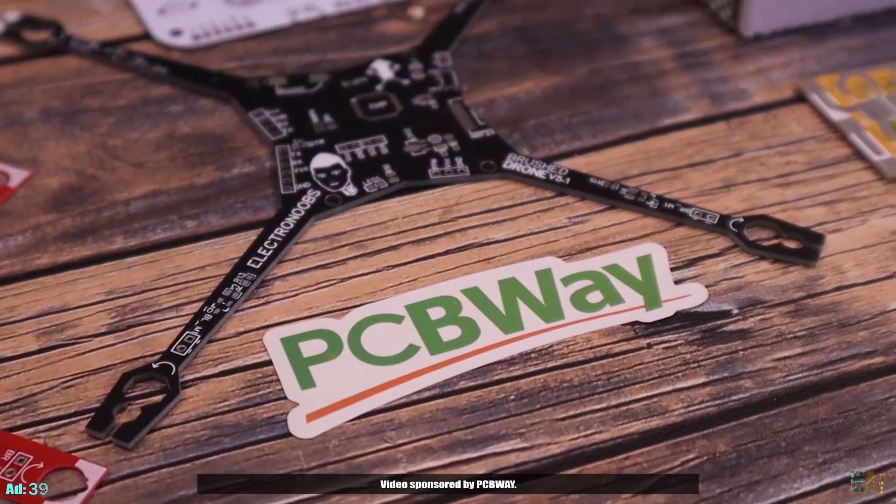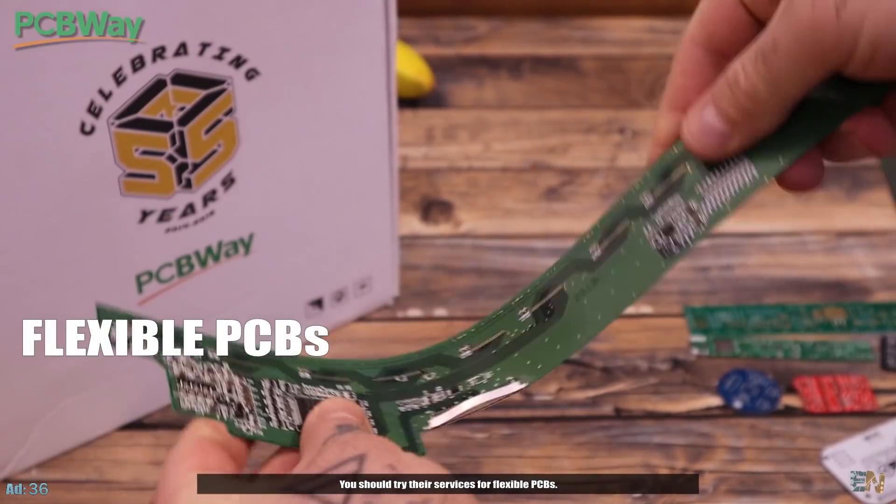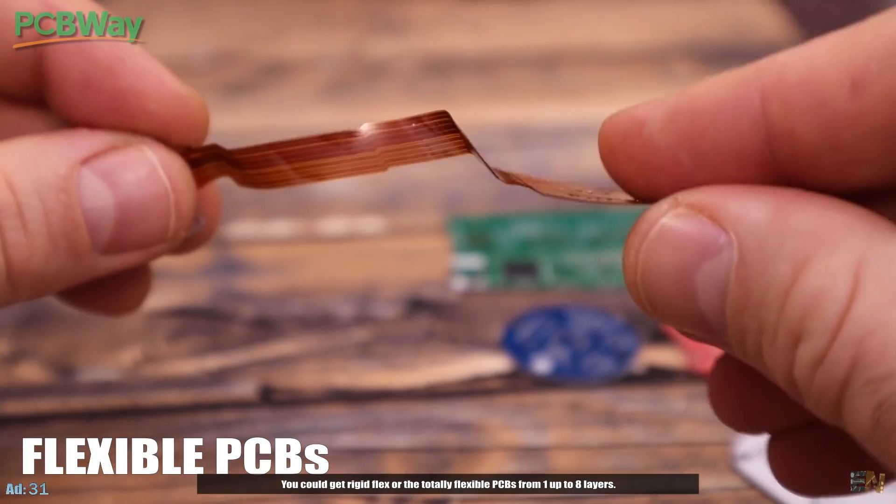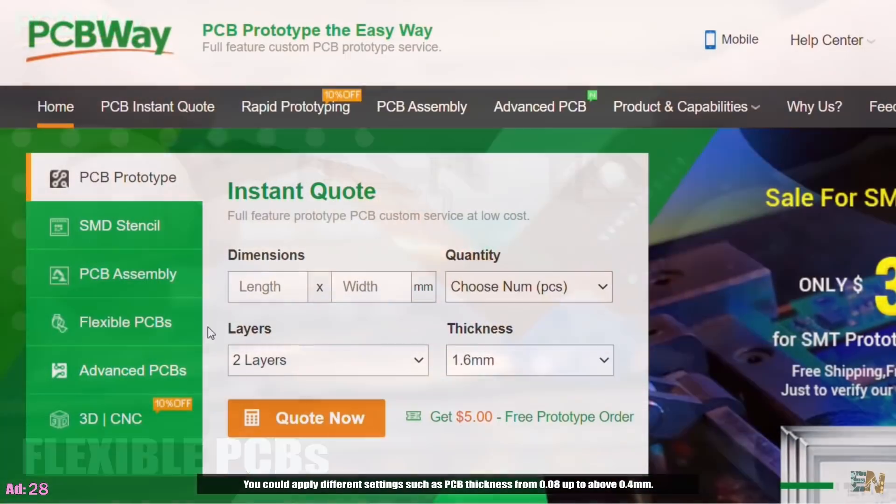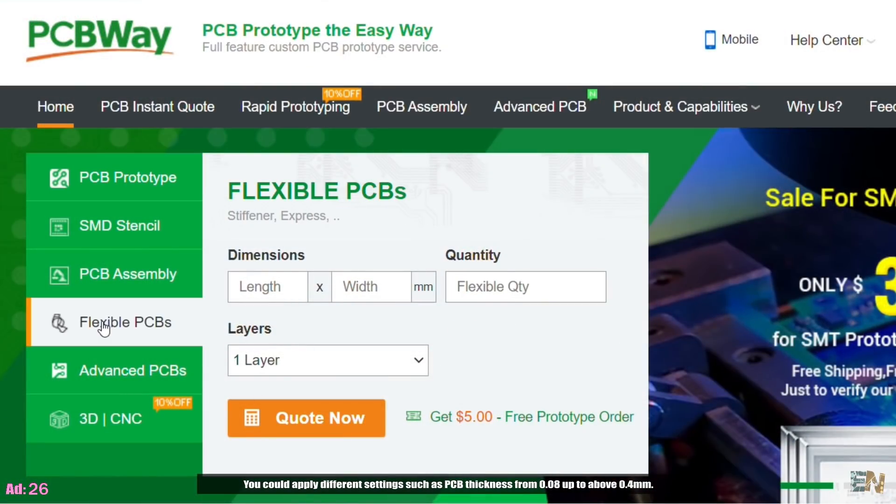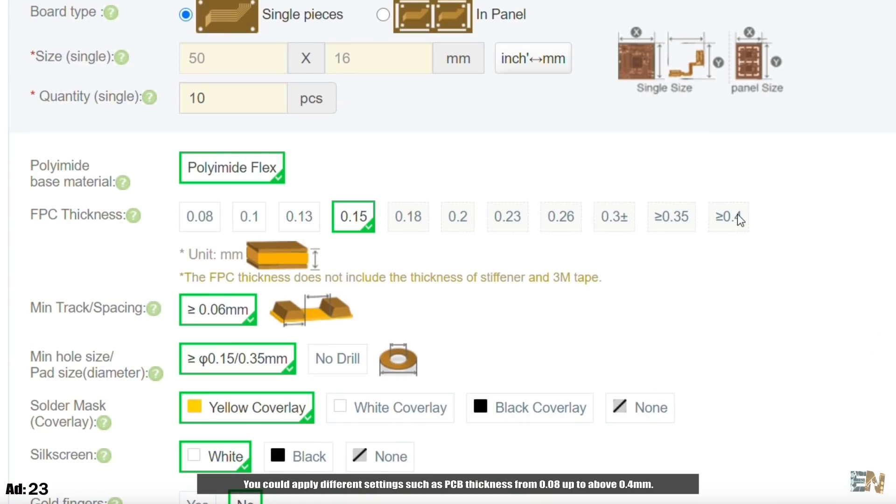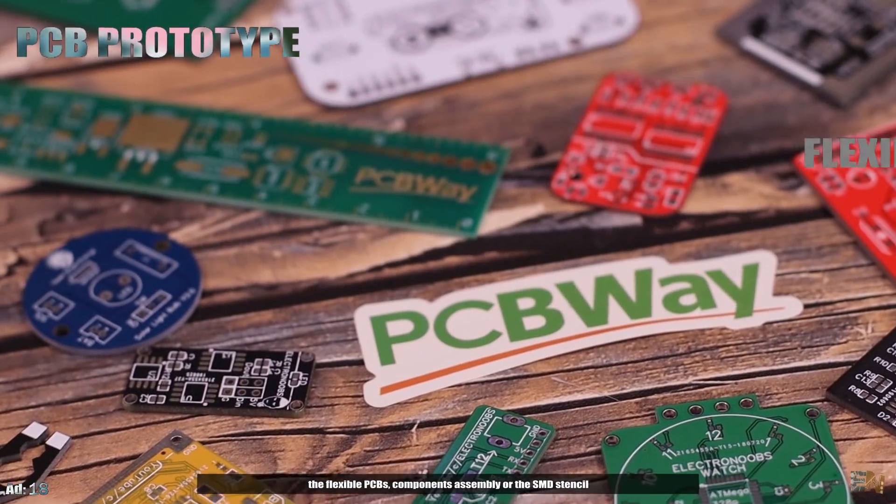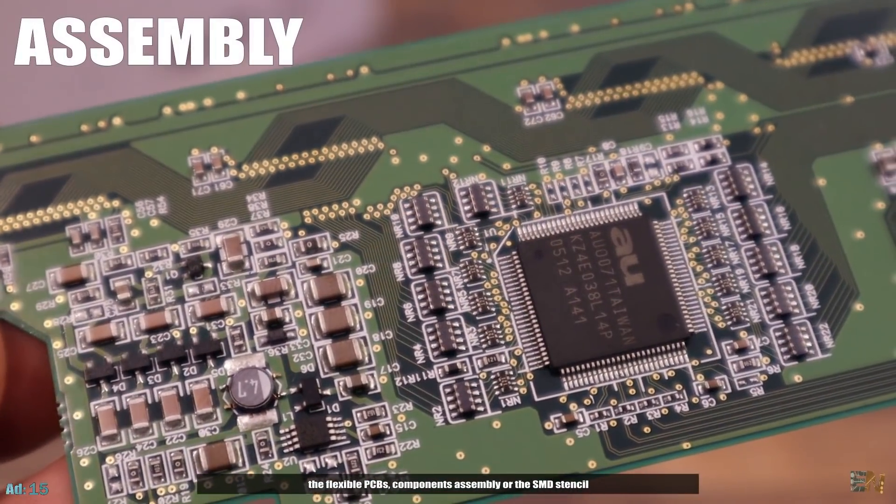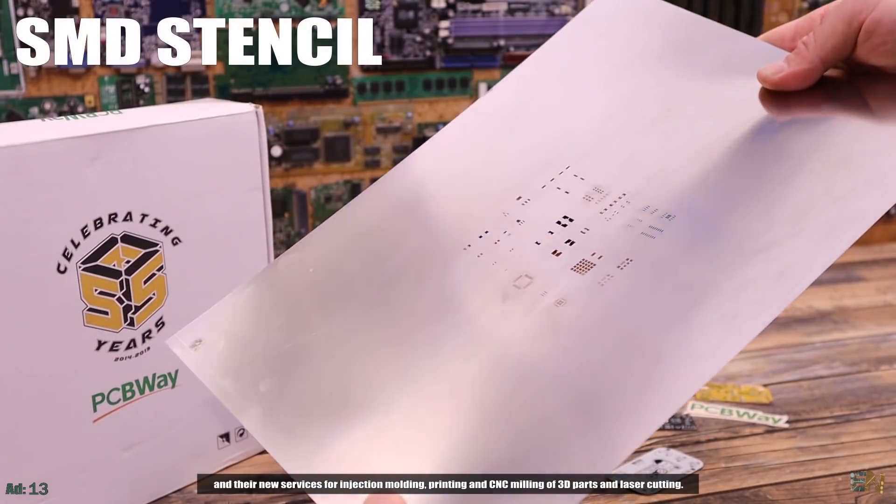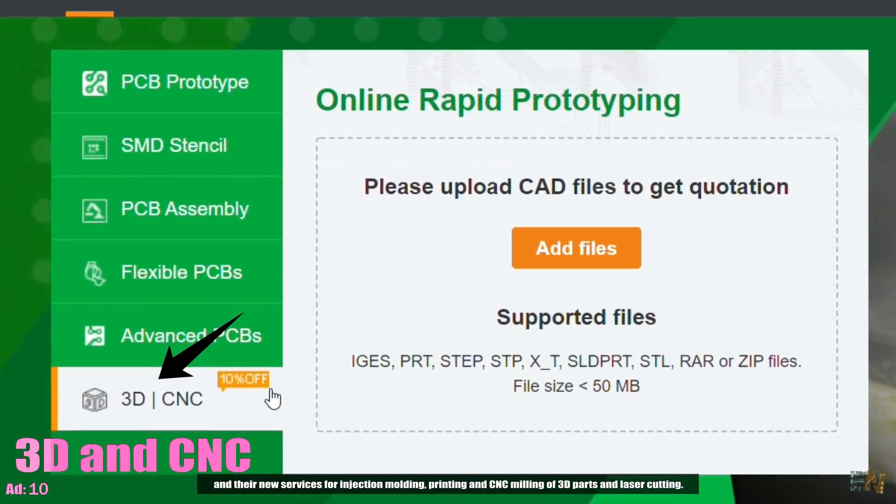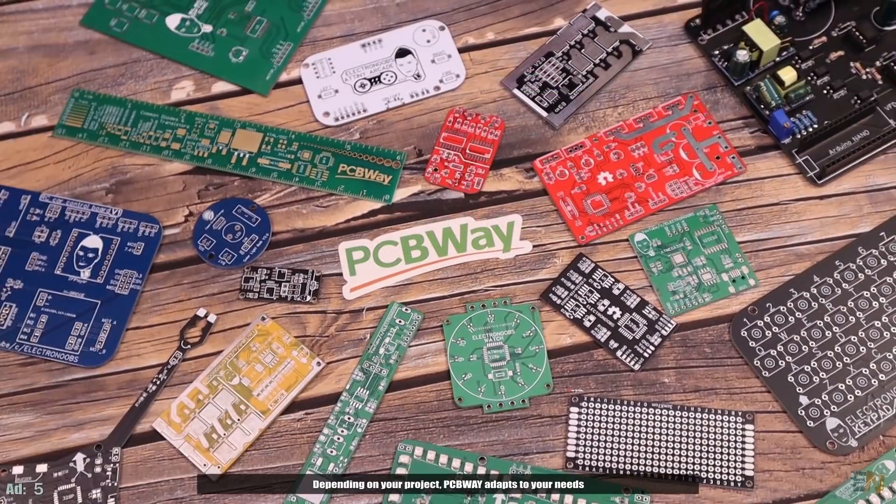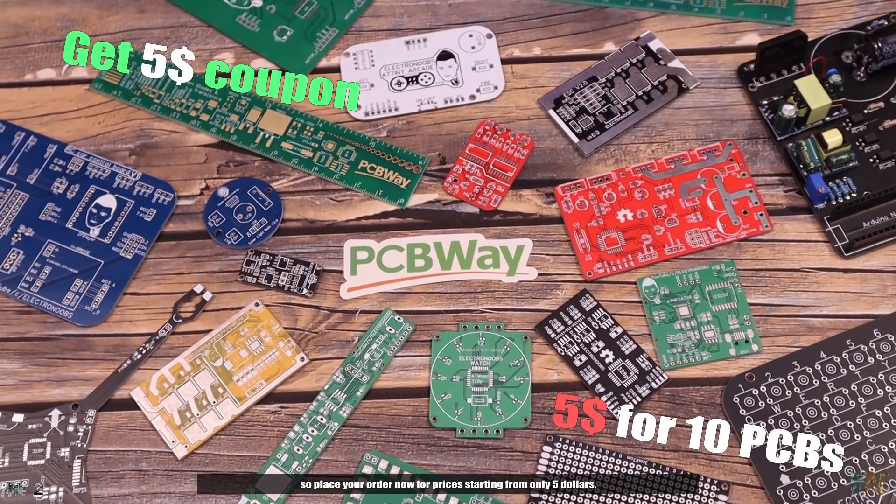Video sponsored by PCBWay. You should try their services for flexible PCBs. You could get the rigid flex or the totally flexible PCBs of 1 up to 8 layers. You could apply different settings such as the PCB thickness from 0.08 up to above 0.4 mm. So go to PCBWay.com and try one of their services for PCB prototype, the flexible PCBs, components assembly or the SMD stencil and their new services for injection molding, printing and CNC milling of 3D parts and laser cutting. Depending on your project, PCBWay adapts to your needs. So place your order now for prices starting from only $5.